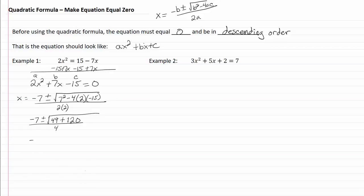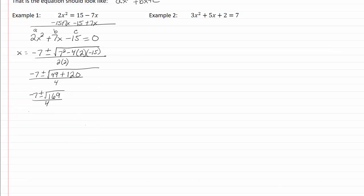So that means we now have negative 7 plus or minus the square root of 169 over 4. We can take the square root of 169, which means we've got negative 7 plus or minus 13 over 4.